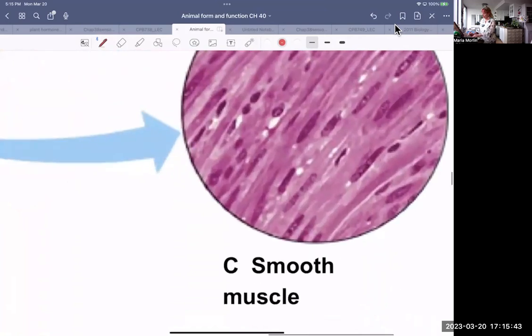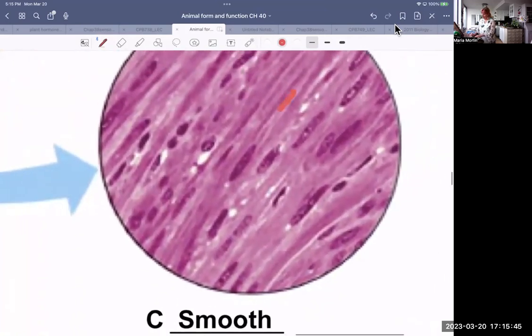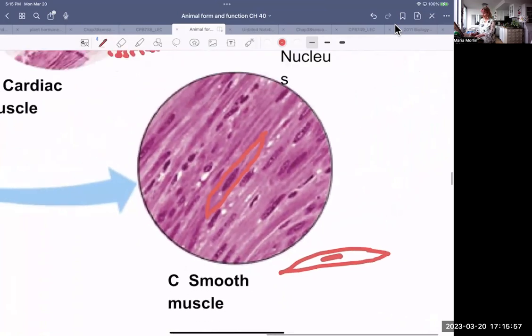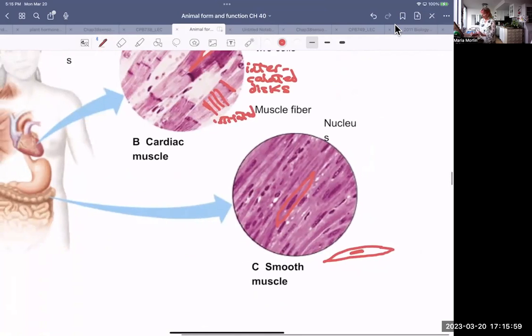And smooth muscle is really what it says. It is smooth. So that's a muscle. They're kind of a spindle shape like that. They'll have one nucleus. So they're uninucleate. They're not multinucleate. But they're tightly packed together.